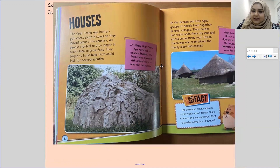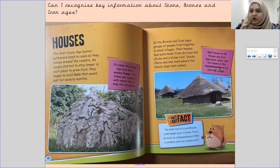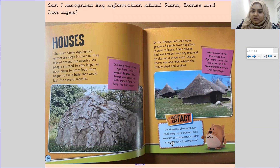In the Bronze and Iron Ages, groups of people lived together in small villages. Their houses had walls made from dry mud and sticks and a straw roof. Inside there was one room where the family slept and cooked. Most houses in the Bronze and Iron Ages were round, like the houses in this reconstruction of an Iron Age village. The straw roof of a roundhouse could weigh up to two tonnes — that's as much as a hippopotamus.